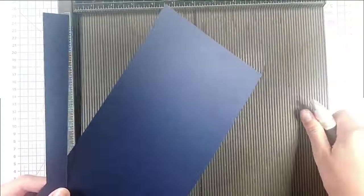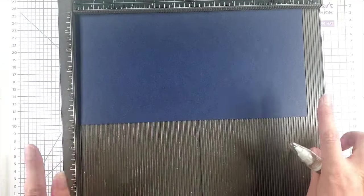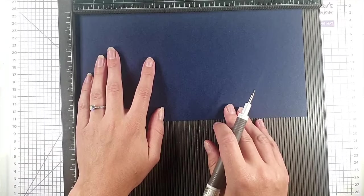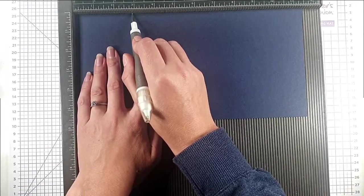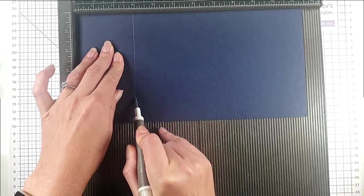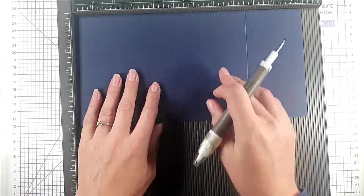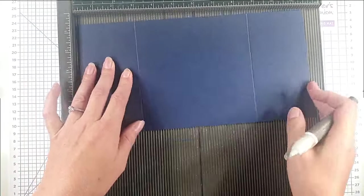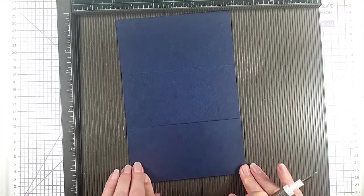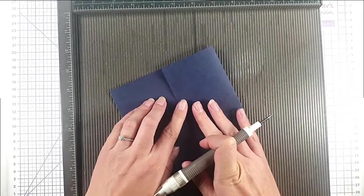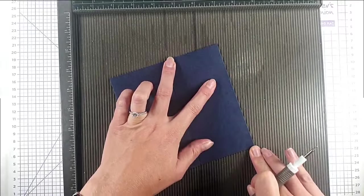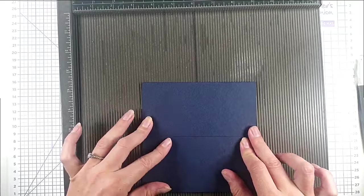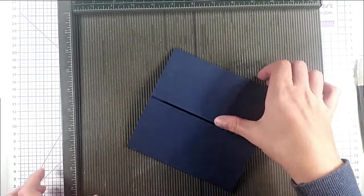I'm going to make a gatefold card so I've got an 11 and a half by 5 and three quarter inch piece of cardstock. I'm going to score at 2 and seven eighths, then turn it round and score at 2 and seven eighths again. The reason I'm not doing it at 6 inches is because I'm using A4 paper which is 11 and three quarter inches, so I find it easier to do it just under 6 inches and not have to buy the 12 inch cardstock.